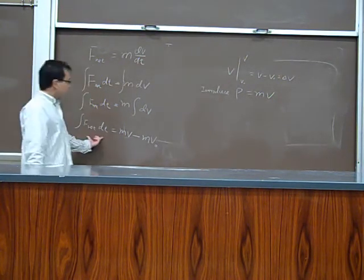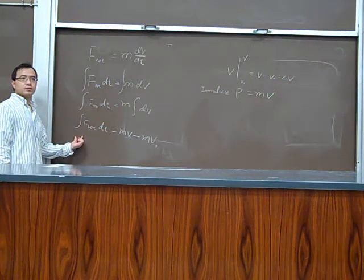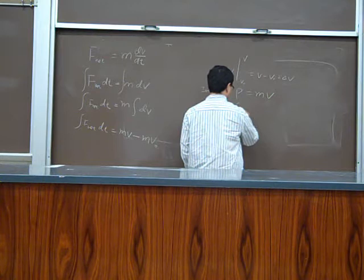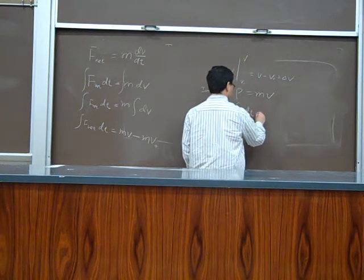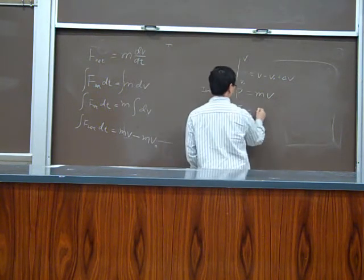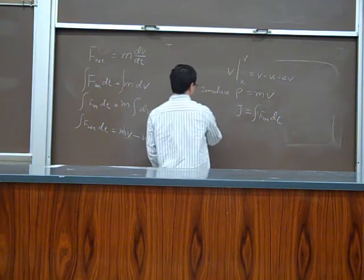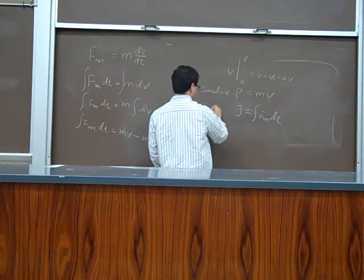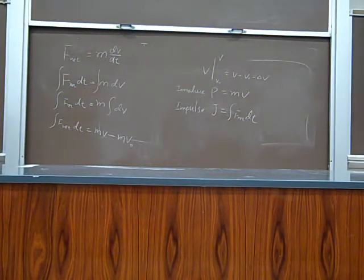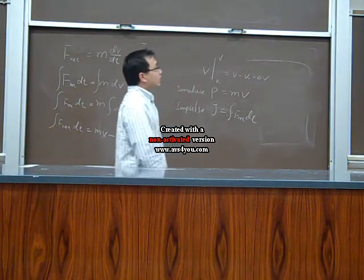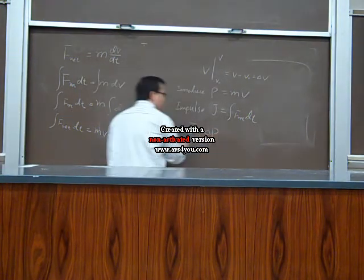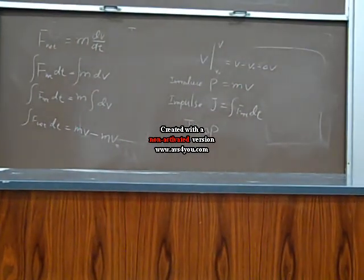And we also call this term the time integral of the force. This is impulse. We call this term impulse. So after that, we got the so-called impulse momentum theorem. This is J. This is delta P. So J equals to delta P. The momentum change equals to the impulse.